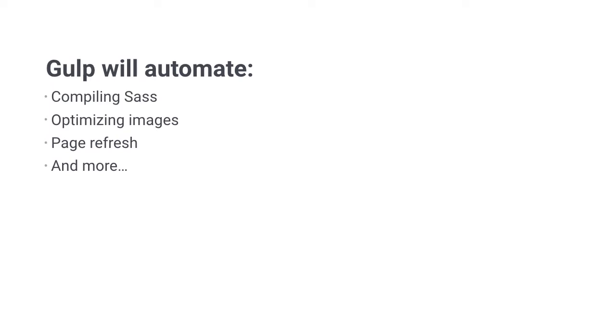Whatever you wanna call it, there is one characteristic that stays the same: automation. Basically, you would use Gulp to automate stuff that you would normally have to do manually. For example, manually compiling Sass, manually optimizing images, manually refreshing your page on the browser. These three actions can be consolidated into independent tasks, then you would have Gulp run them automatically. That's why tools like Gulp and Grunt are called task runners.